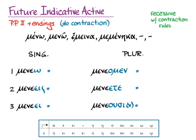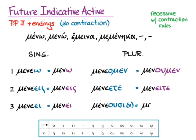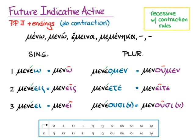Here is the uncontracted stem that you have to understand is there in the second principal part, plus the endings, and what you get are these combinations once you contract them. Remember that the rule for recessive accent with contractions is that you think about where the accent would have been on the uncontracted form and then make sure the accent stays on that same syllable even after contraction. And so we get our final forms: I will stay, you will stay, she will stay, we will stay, y'all will stay, and they will stay. The only difference between these future indicatives and the present indicatives is where the accent is — which is why learning accent rules carefully is so important.